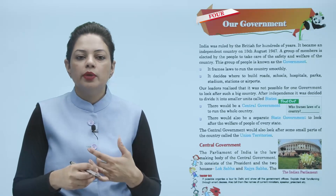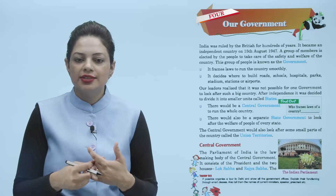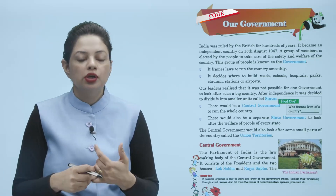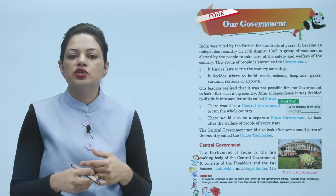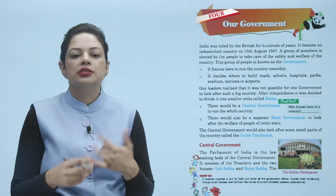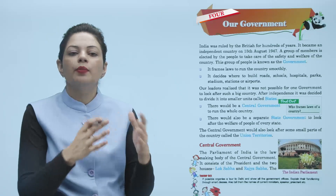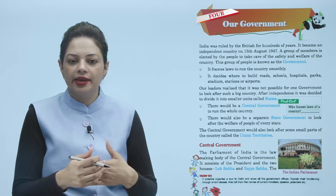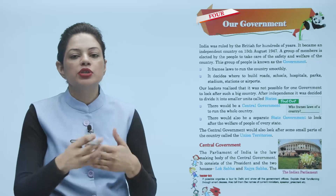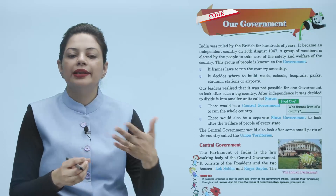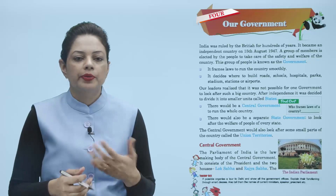जब इंडिया एक independent country बन गई, 15 अगस्त 1947 को हमारा भारत आजाद हुआ था, तो एक ऐसी government बनाई गई जिसमें इंडिया के ही लोग थे। लोगों ने ही उन्हें choose किया था कि ये group हमारी country के लिए rule बनाएगा, हमारी country की take care करेगा, हमें सुरक्षा प्रदान करेगा और हमारे लिए भलाई का काम करेगा। तो उस group को नाम दिया गया government का।